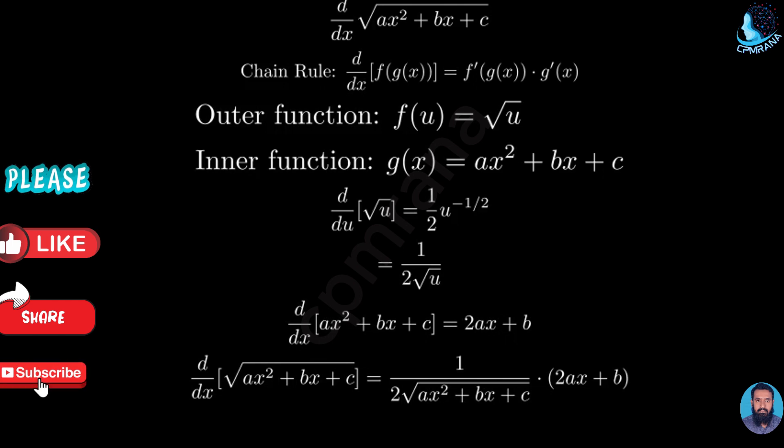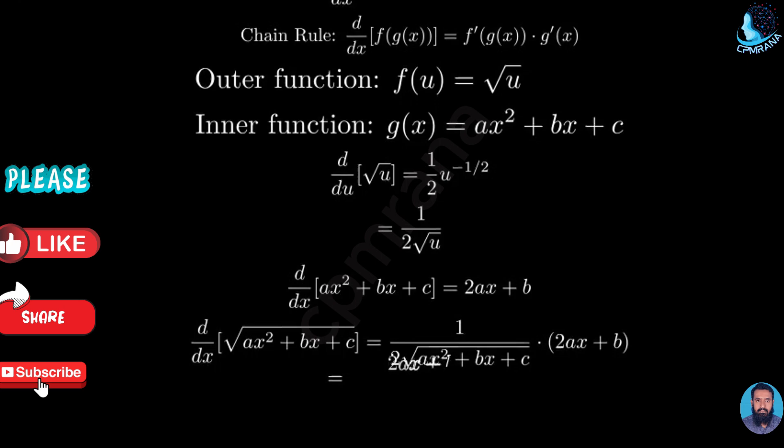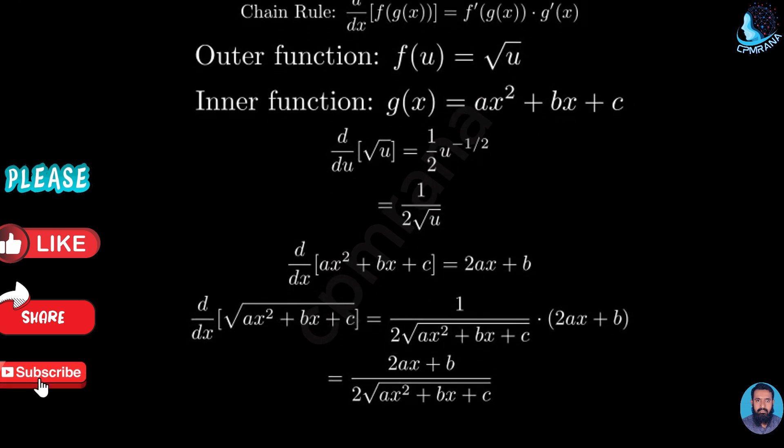Finally, we can write our answer in its simplest form. The derivative equals 2ax plus b over 2 times the square root of ax² plus bx plus c.